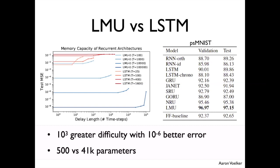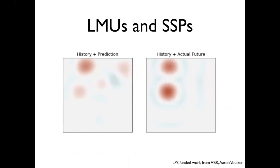Nengo makes all of this easy to do. Here's another example from ABR that Terry will talk about — keyword spotting: trying to recognize specific words in speech. This is more for devices that need to detect very particular words, like the phrase that wakes up a voice assistant. Industry is really interested in this because these networks run all the time and need to be as energy efficient as possible.